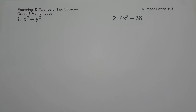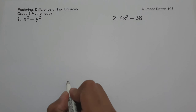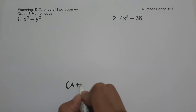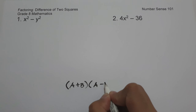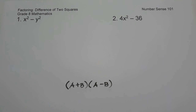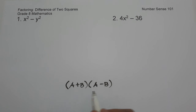In order for us to understand this, let us review the concept of the product of the sum and difference of two terms. If we have the quantity a plus b times the quantity a minus b, always remember that the product of the sum and difference of two terms is the difference of the squares of the terms.